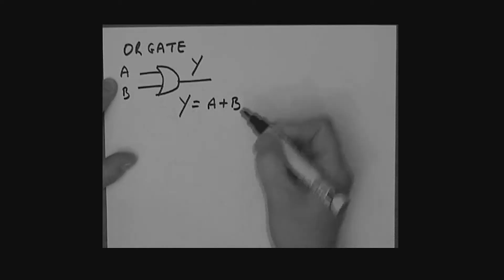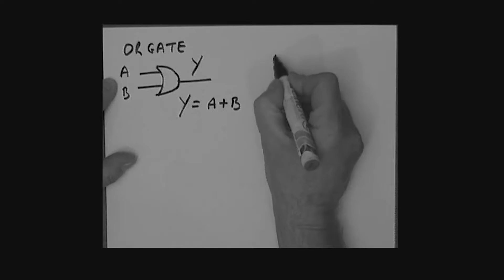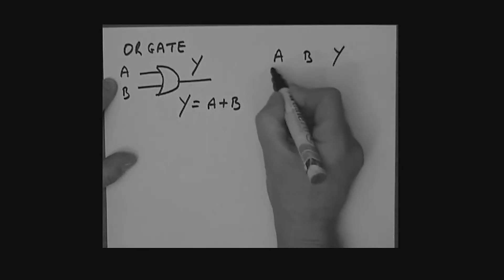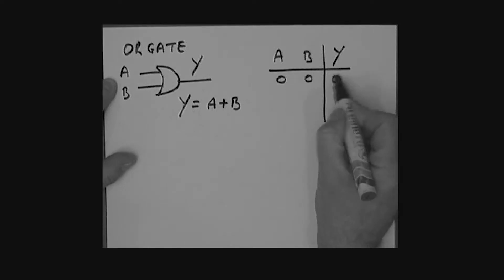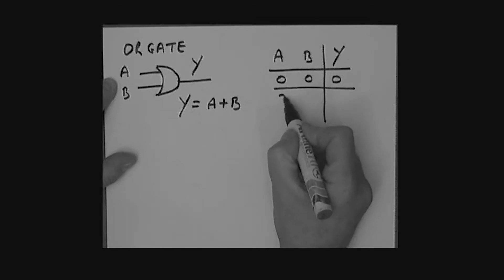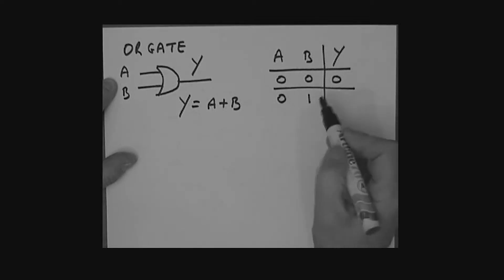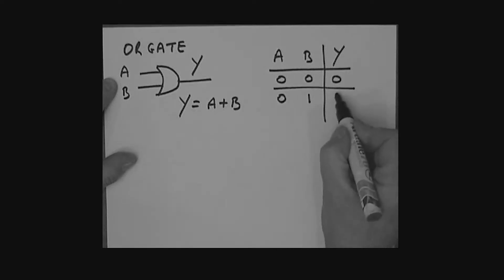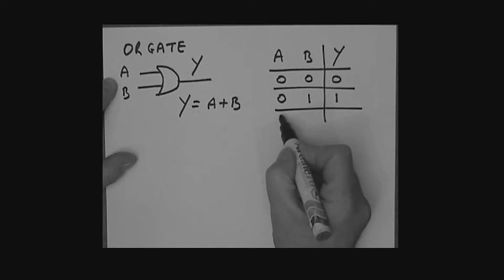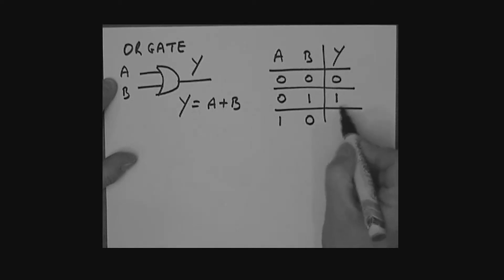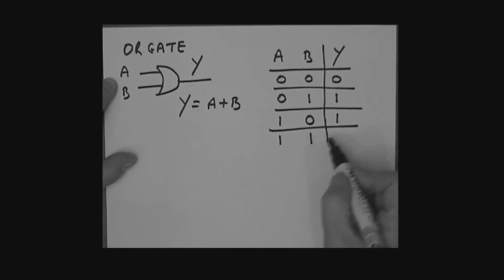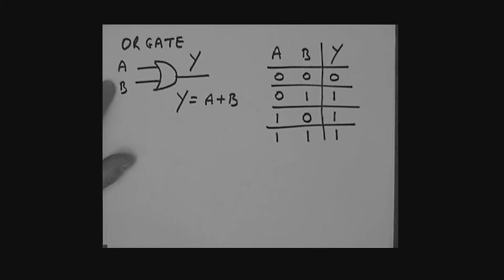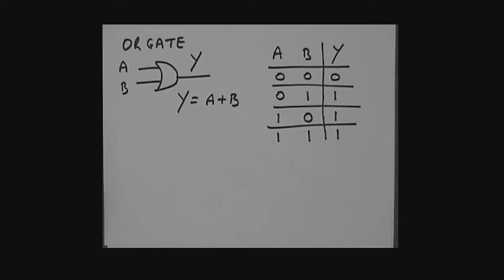Let's write down a truth table for the OR gate. Here we have A, B, and Y. If A is 0 and B is 0, Y is 0. If A is 0 and B is 1, A OR B gives a 1. If A is 1 and B is 0, A OR B gives a 1. And if A is 1 and B is 1, A OR B gives a 1. There is our OR gate function.